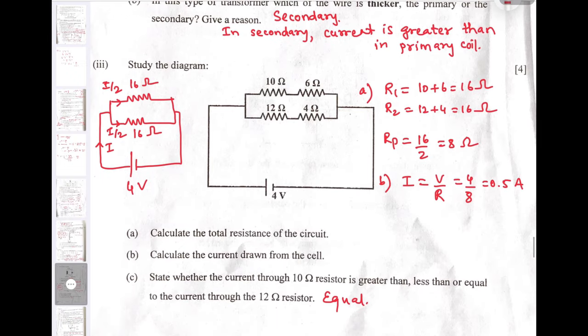Next question is based on the circuit diagram. We need to identify the total resistance of the circuit. First you can see that 10 Ohm and 6 Ohm are in series, so equivalent is 16 Ohm. Similarly, 12 Ohm and 4 Ohm are in series, so the equivalent is again 16 Ohm. Two 16 Ohm resistors are connected in parallel and hence the total resistance of the circuit becomes 8 Ohm.